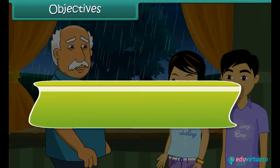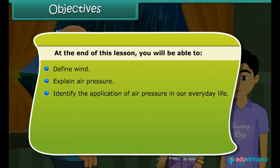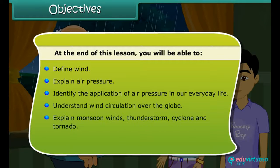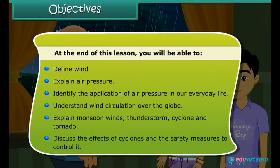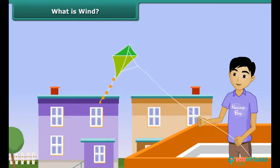At the end of this lesson, you will be able to: define wind, explain air pressure, identify the application of air pressure in everyday life, understand wind circulation over the globe, explain monsoon winds, thunderstorm, cyclone, and tornado, and discuss the effects of cyclones and the safety measures to control them.